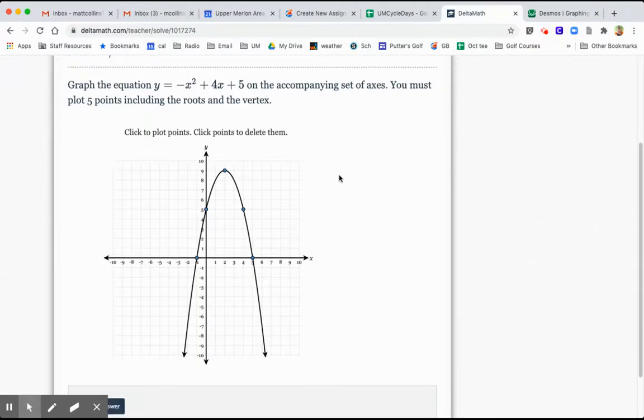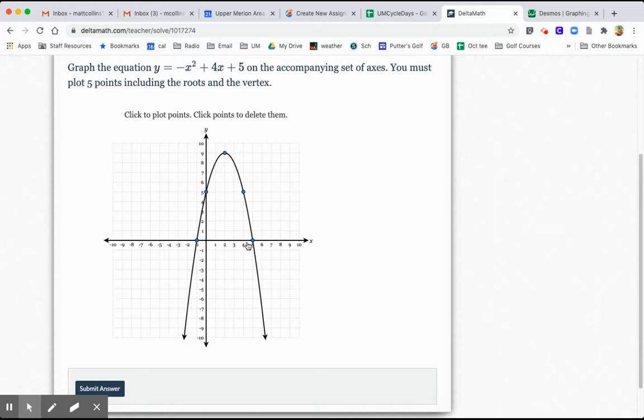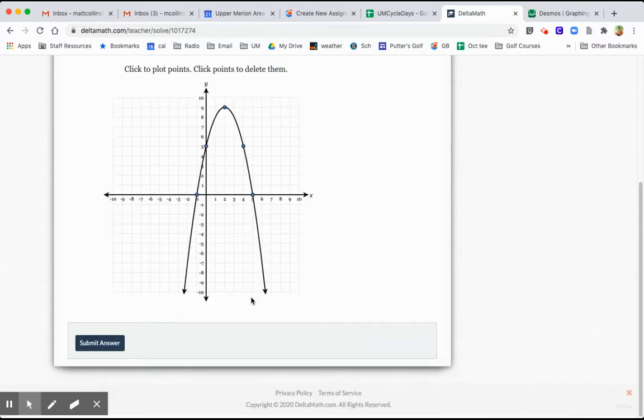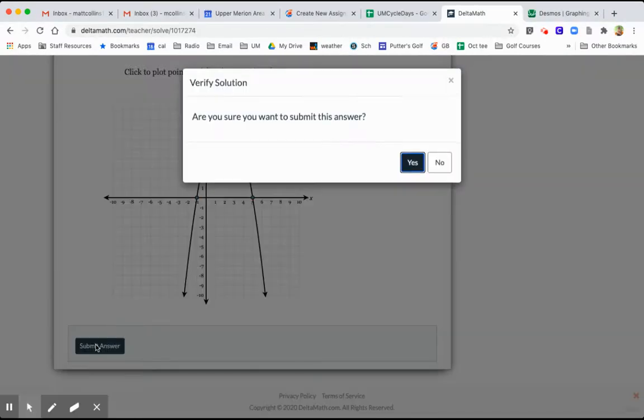Just be careful. You've got to plot these roots, these x-intercepts and the vertex. Otherwise, it will still draw this, but it will mark your answer wrong. They're very specific about the directions here.